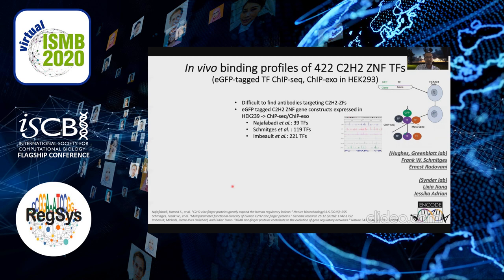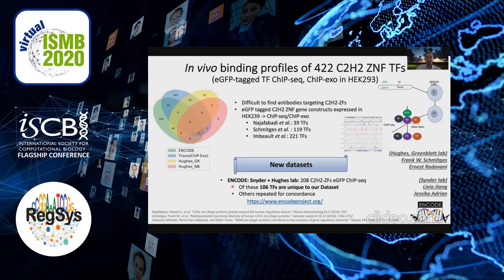It has been hard to do ChIP-seq for this family of TFs because it's hard to find antibodies that would target these zinc finger transcription factors. To get around this, there have been a few previous large-scale studies from the Hughes lab and the Trono lab where they created TF fusions with GFP, expressed them in HEK 293 cells, and then did ChIP for the GFP.